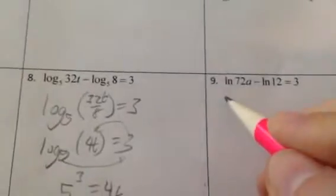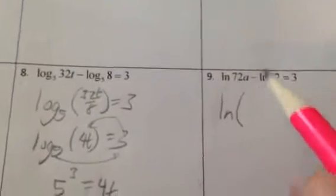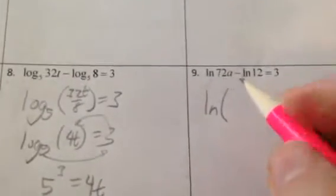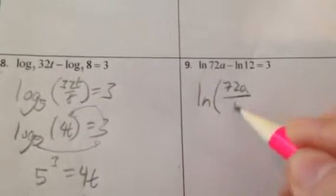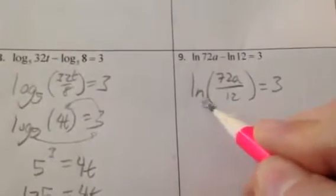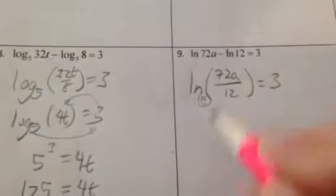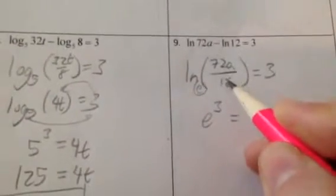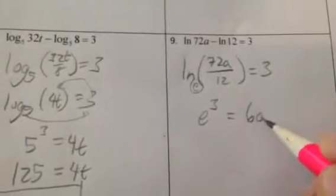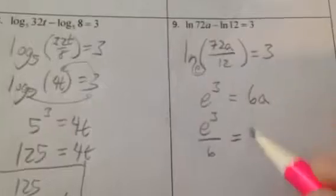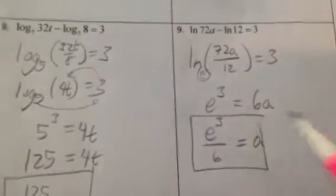So ln has the same properties as logs because it is a log. It's just log base e. So ln of 72a divided by 12 equals 3. So that means the base is e. So e to the 3rd power equals 72a divided by 12, so that's 6a. So solving for a, just divide by the 6. So e to the 3rd divided by 6 is a.